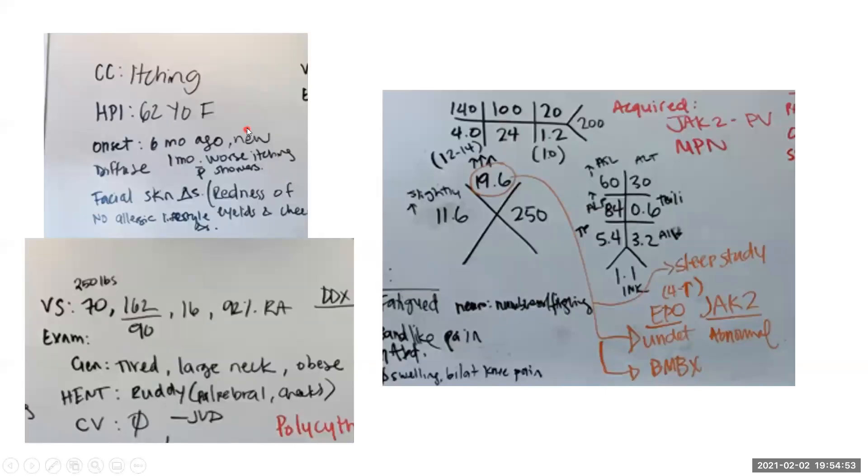So moving on to the case, we later find out that on exam, the patient has a ruddy complexion on her face. She also has hypertension and ultimately was revealed in labs that she has a very high hemoglobin at 19.6, and so the concern here is that the patient has polycythemia.